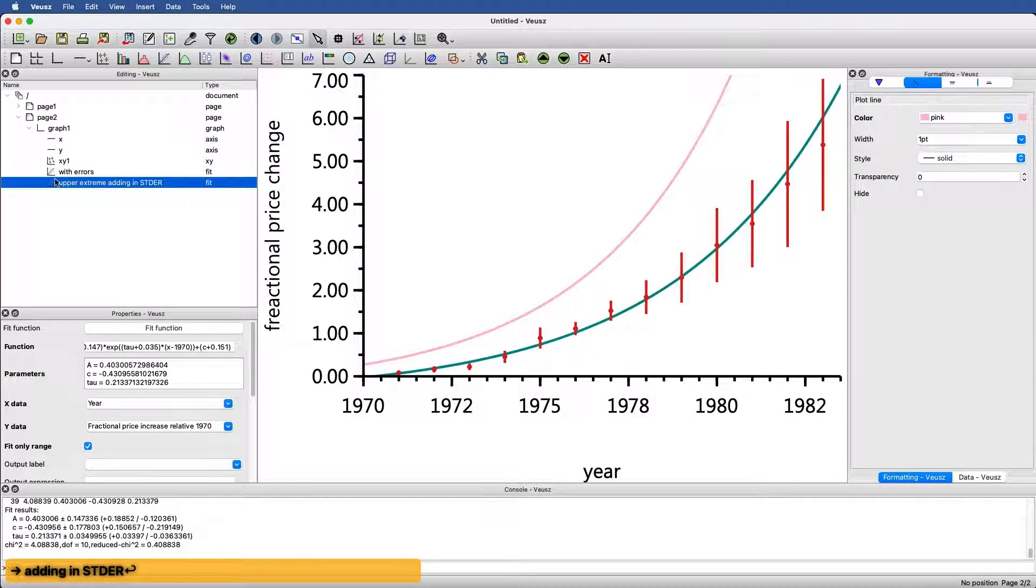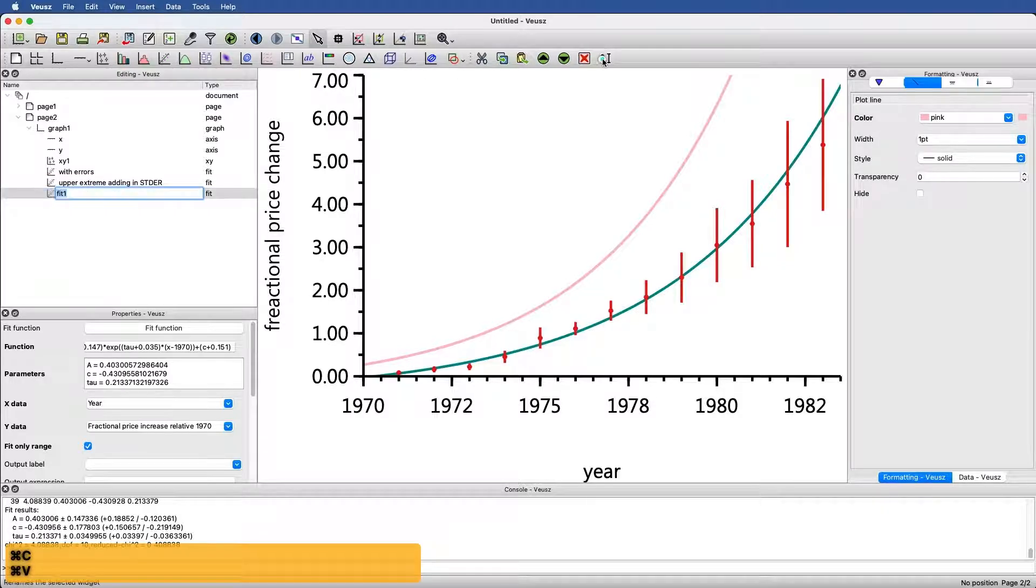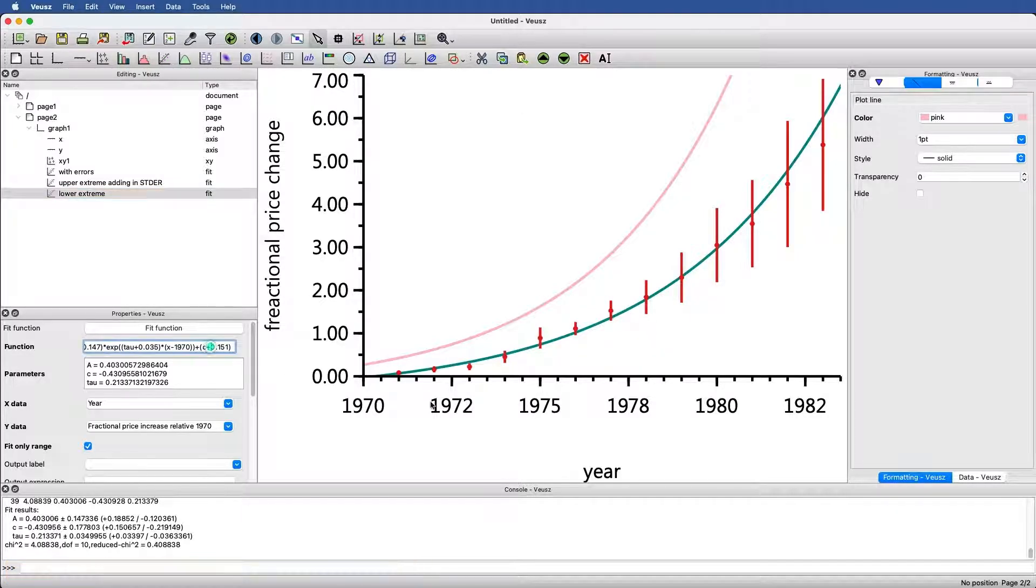What is the lower extreme? Well, now it's actually really easy to do. I'm just going to copy and paste this. I'm going to call this the lower extreme and I'll just go in and every time we added in the error, I will just subtract the error. Again, what we're doing is we're just letting views do the math for us, taking the fit parameters that are here and then either adding or subtracting the error that was reported down here.